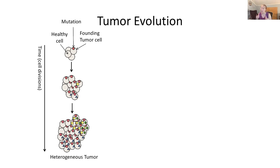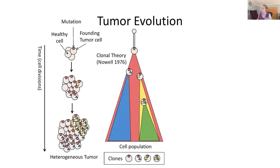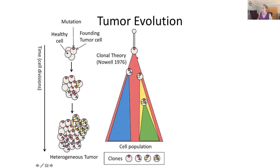We don't actually observe this process as it happens. But we can think about the history of this tumor as being described by the different cell populations — different populations can arrive and sweep through, or some might die off. If you look at this, you might start to realize that you can describe this history as a type of rooted tree, where ancestral relationships between populations are captured.